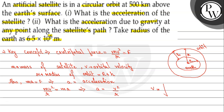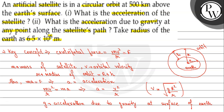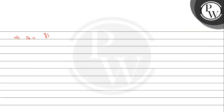Now the formula for orbital velocity is √(gR²/r). Here g is the acceleration due to gravity at the surface of Earth. If we substitute this value of v into A = v²/r, then v² cancels the square root, and A becomes gR²/r². Since small r equals R + H, we get acceleration A = g·R² / (R + H)².